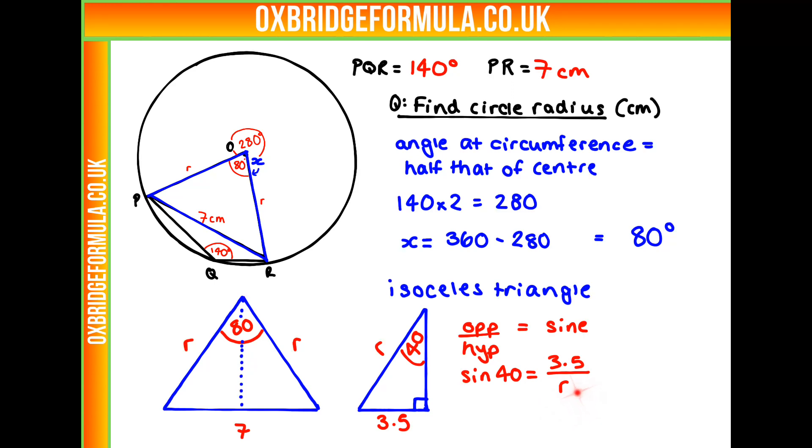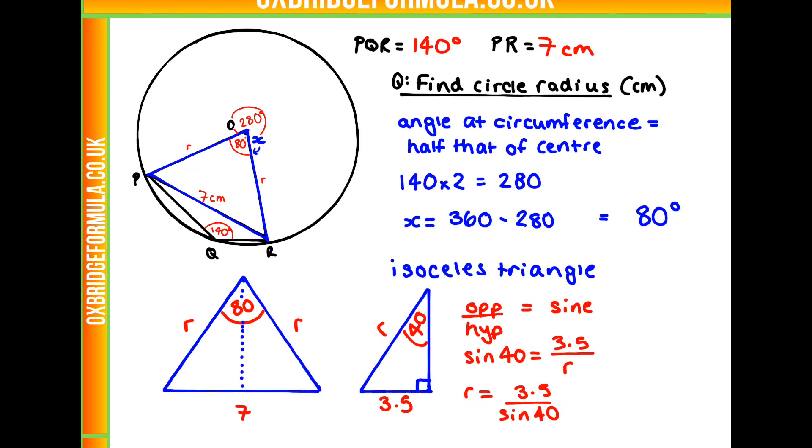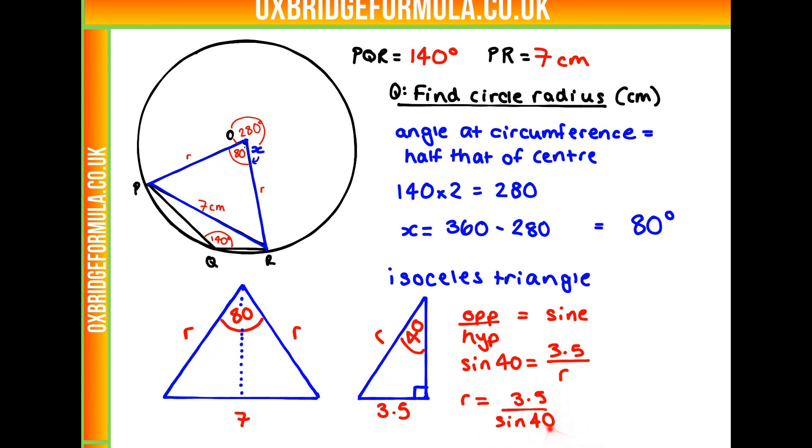So to find R, all we need to do is times both sides by R and divide both sides by sine 40. So we get R equals 3.5 over sine 40. So that's our final answer there. And our answer overall is E.